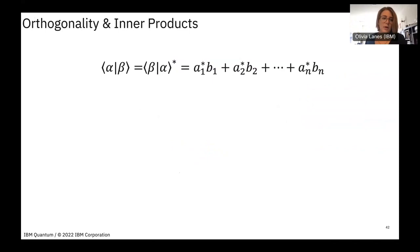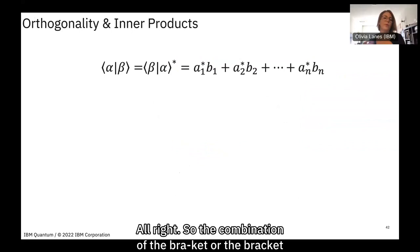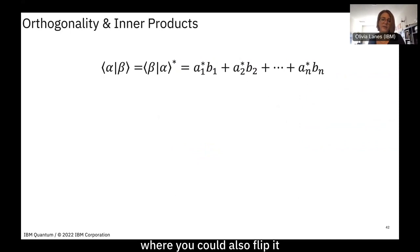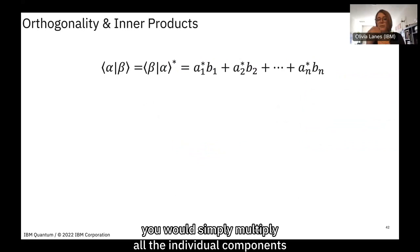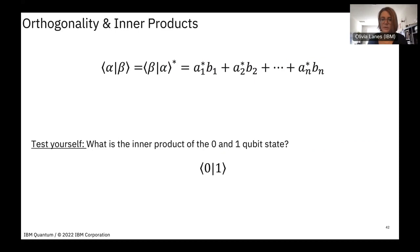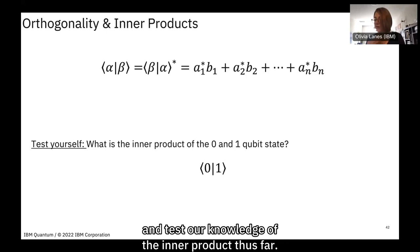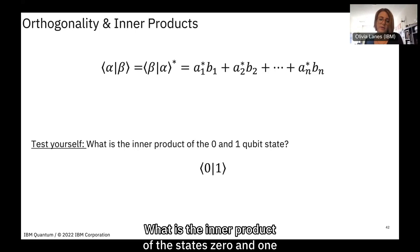All quantum computations live as quantum states in the vector space we call the Hilbert space. The combination of bra and ket — the bracket — is the inner product, equivalent to the dot product between two vectors. To compute it, multiply each component of the two vectors and sum them together. Now, what is the inner product of the states |0⟩ and |1⟩?